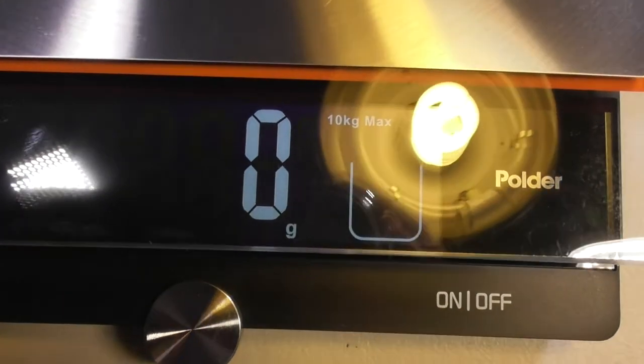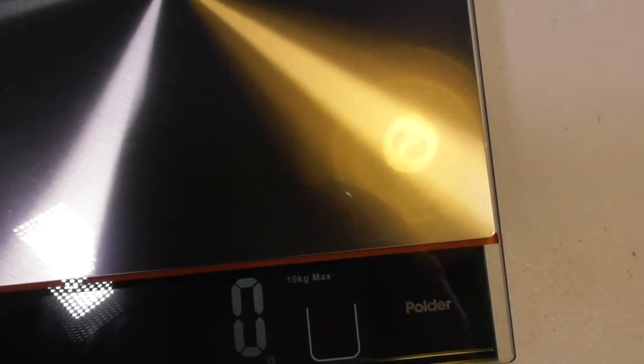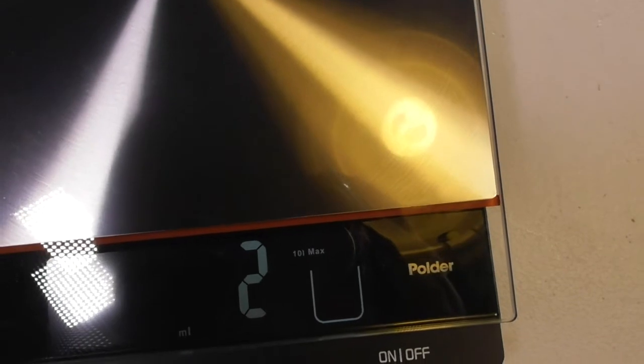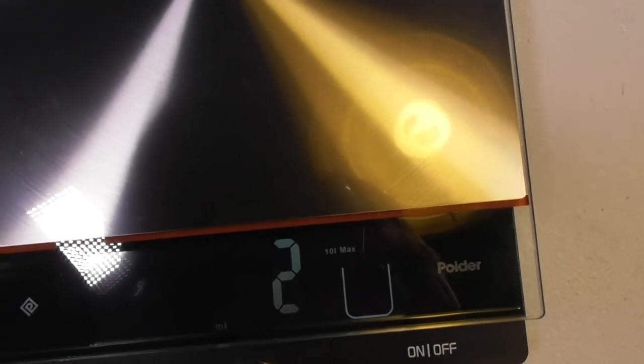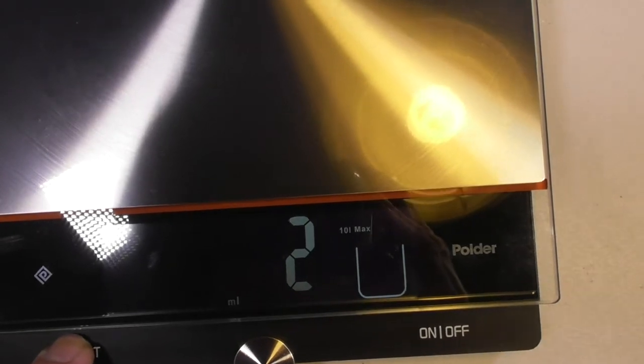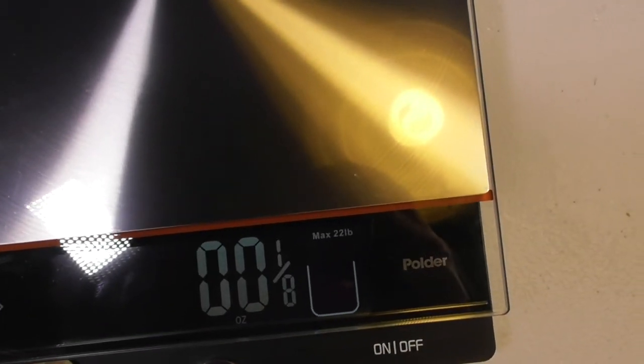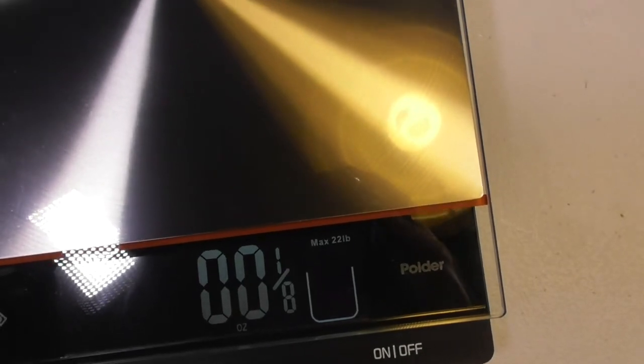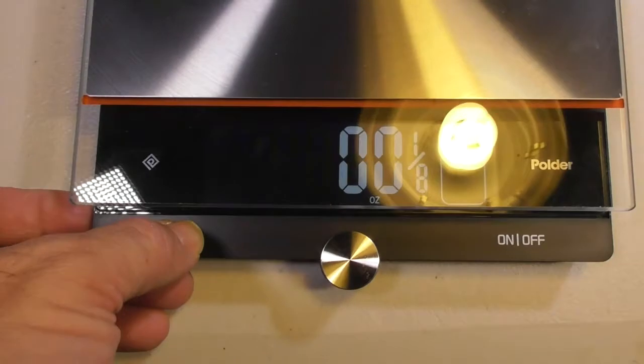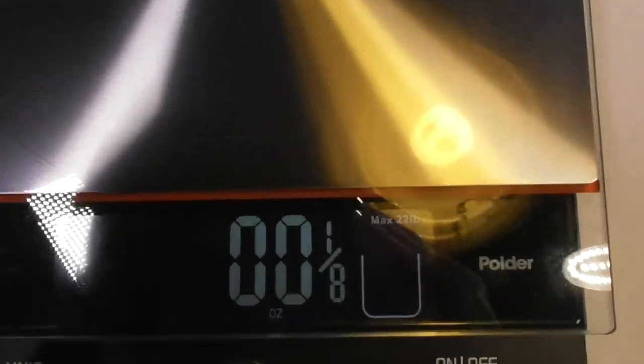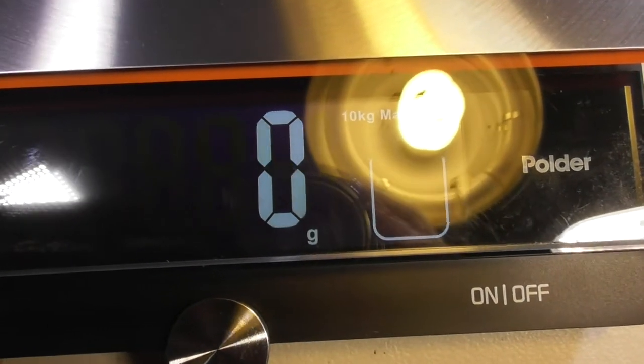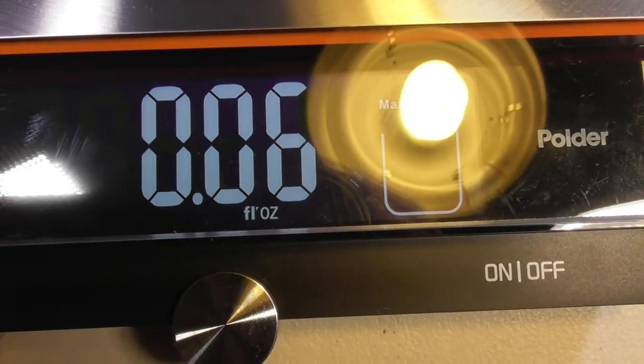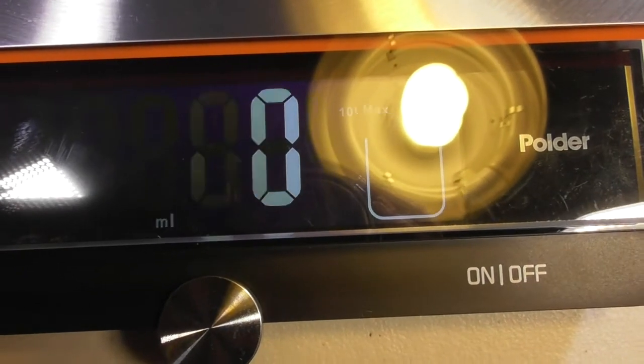Okay, it just shut off. You get a reading right away, so that's a nice thing. Now we just went over to milliliters. I don't know why this switch is just not sensitive enough. Fluid ounces, grams, milliliters, ounces. So this switch is really, it's such a nice looking item, I really want to keep it, but I'm not really thrilled.